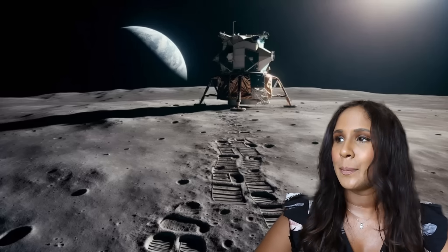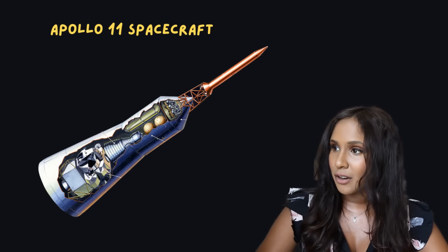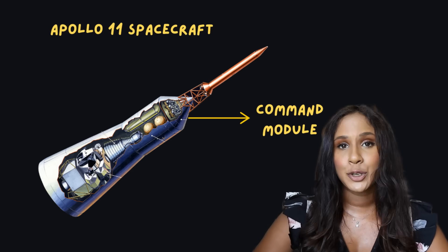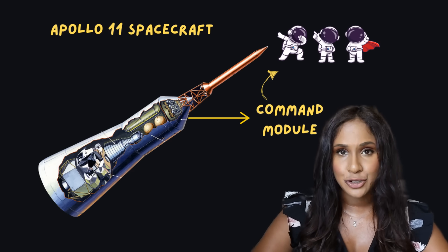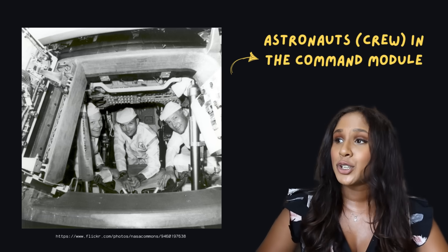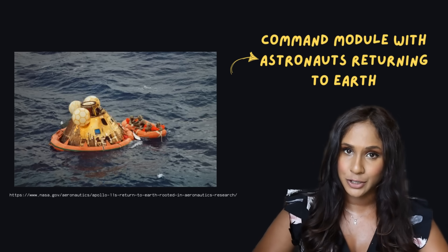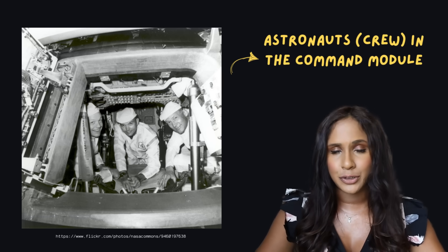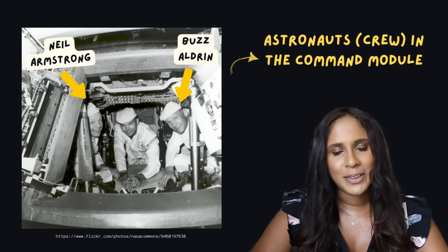The Apollo 11 spacecraft was actually two separate entities: the command module and the lunar module. The command module was used to get the three astronauts to the moon and back again — essentially the cone that contained the crew and vital equipment, and the vessel that returned back to Earth. The astronauts inside were Neil Armstrong, Buzz Aldrin, and Michael Collins.